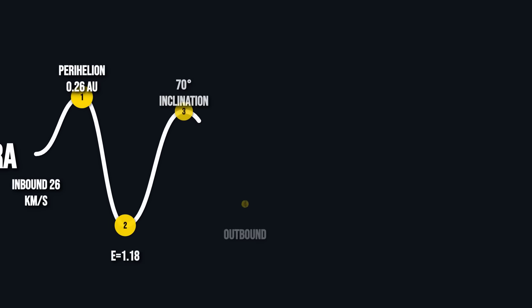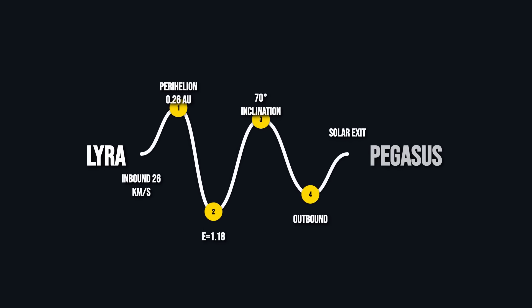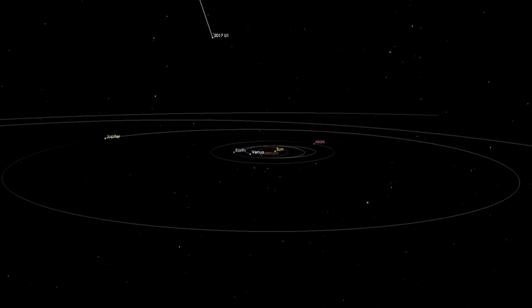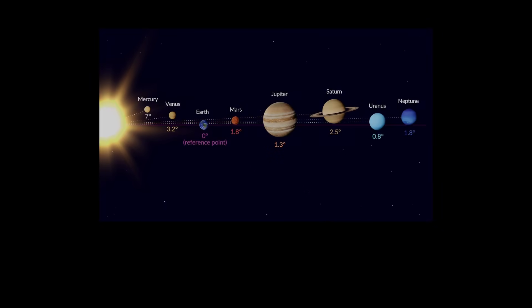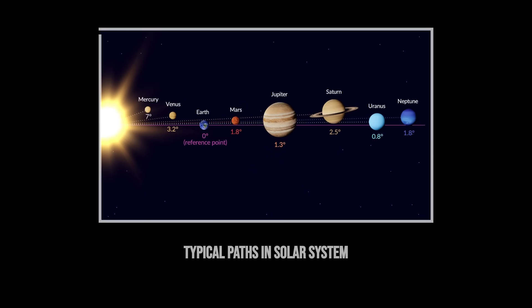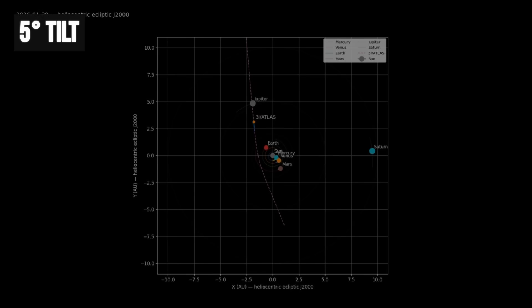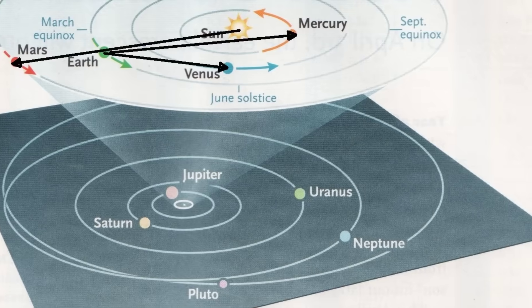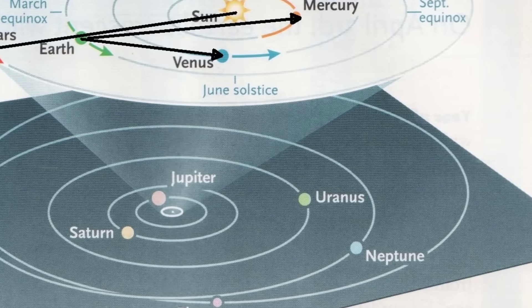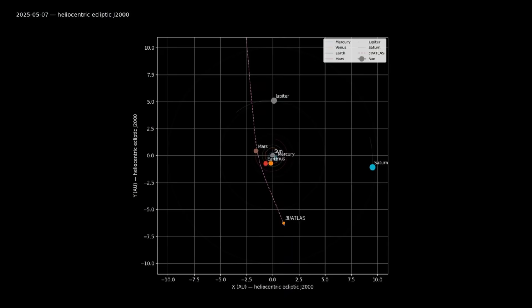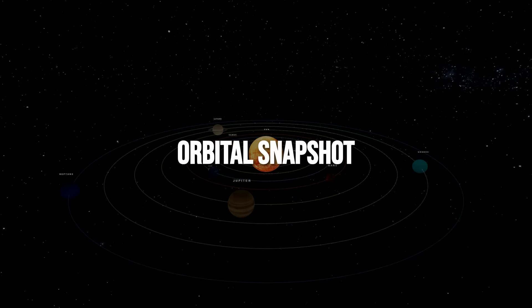So let's look at the path 3I-Atlas is actually taking. Most comets and asteroids swing through the solar system at steep angles, sometimes diving in from above or below the plane where the planets orbit. But 3I-Atlas is different. Its orbit hugs the ecliptic, tilted only about 5 degrees from the flat disk where Earth, Mars, and Jupiter all travel. That means it's moving through the same crowded lane as the major planets, not just cutting across it.